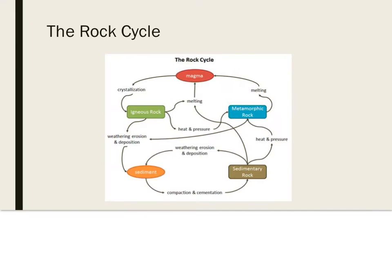The rock cycle: there are three major classifications of rock based on their method of formation — igneous rock, metamorphic rock, and sedimentary rock. The rock cycle is the series of processes by which rocks are transformed from one type to another and continually renewed. The origin of all rock can ultimately trace back to the solidification of molten magma.